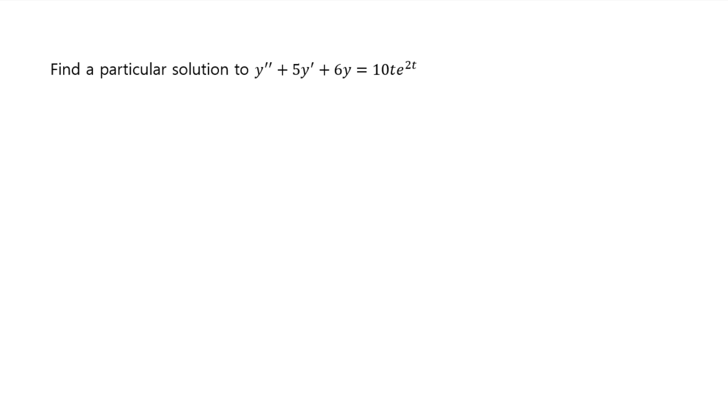Find a particular solution to y double prime plus 5y prime plus 6y equals 10t e to the 2t. For this, you need to use the method of undetermined coefficients.